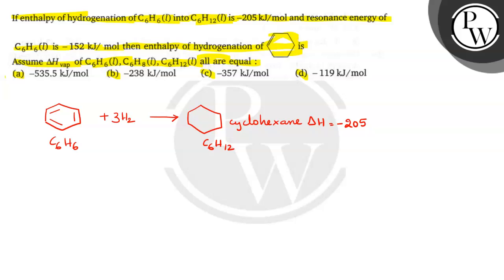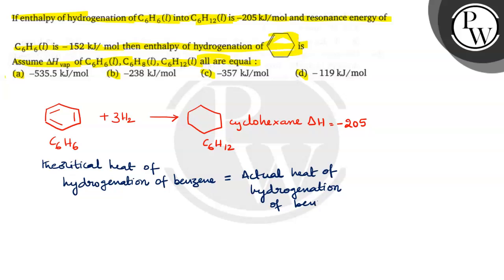So what is the theoretical heat of hydrogenation? Theoretical heat of hydrogenation of benzene is equal to actual heat of hydrogenation of benzene plus resonance energy.